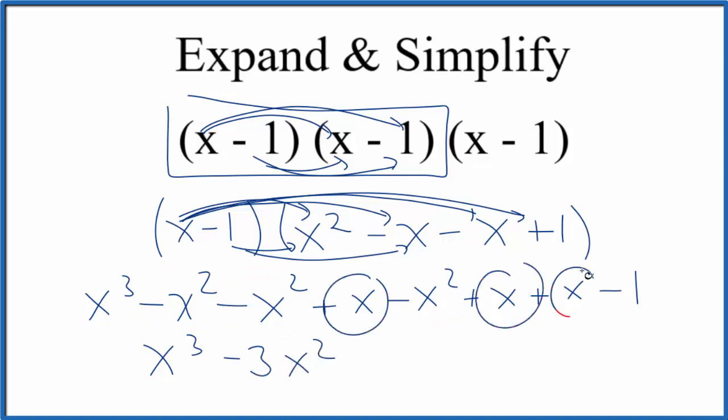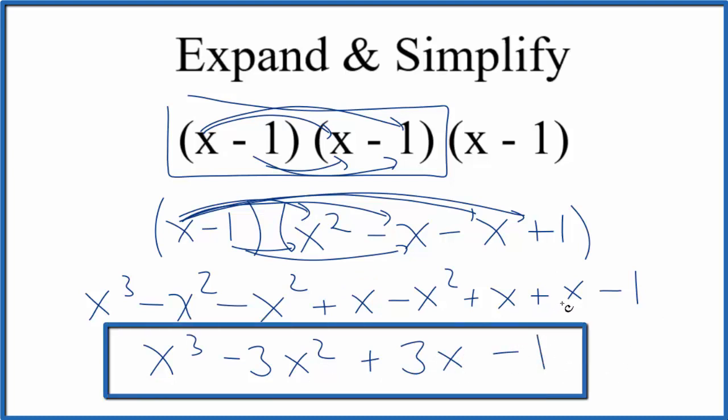Then for x, we have 1, 2, 3, so add those up, that gives us 3x. And finally, we just have negative 1. So this is it, we're done. We've expanded and simplified x minus 1 to the third power, also called x minus 1 cubed. This is Dr. B, and thanks for watching.